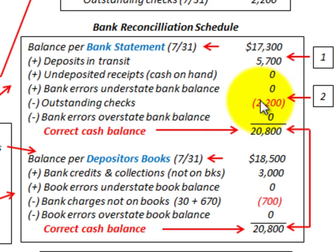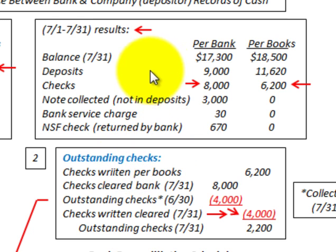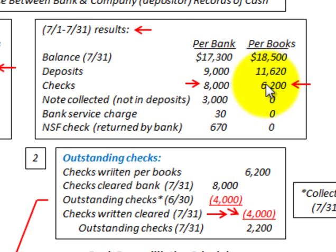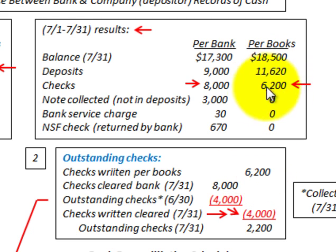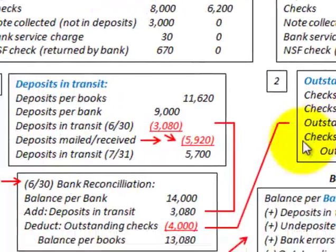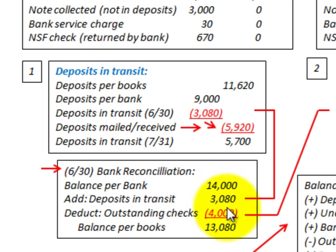The next thing we have to look at is outstanding checks — the amount we're going to be subtracting. Let's look at how we'd calculate those. Going to our outstanding checks for the period July 1 through July 31: checks recorded per the bank are $8,000, and checks recorded per the books are $6,200. The outstanding checks from the previous month at June 30 end of month were $4,000, as shown in the prior bank reconciliation.